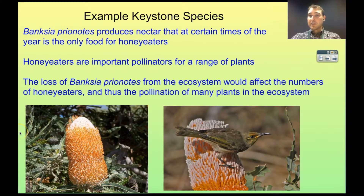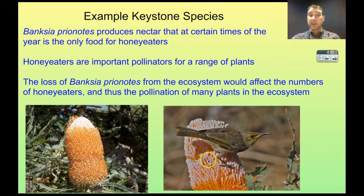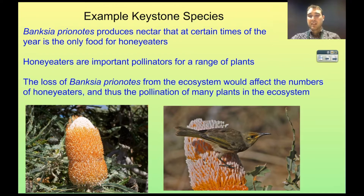Here's an Australian species, and this time it's not an animal — it's a plant. Banksia prionotes produces nectar at certain times of year, and that is the only food available to honey eaters. Here's a brown honey eater on a Banksia prionotes. Honey eaters eat nectar, and they're an important pollinating species because they travel from plant to plant carrying pollen. So they're a very important pollinating species within an ecosystem.